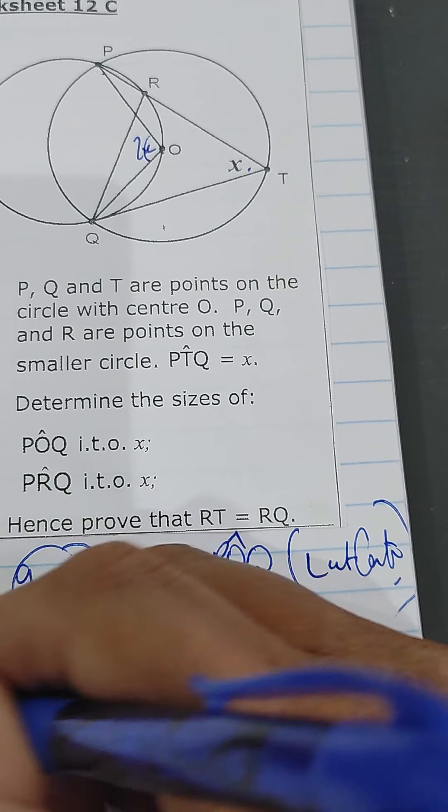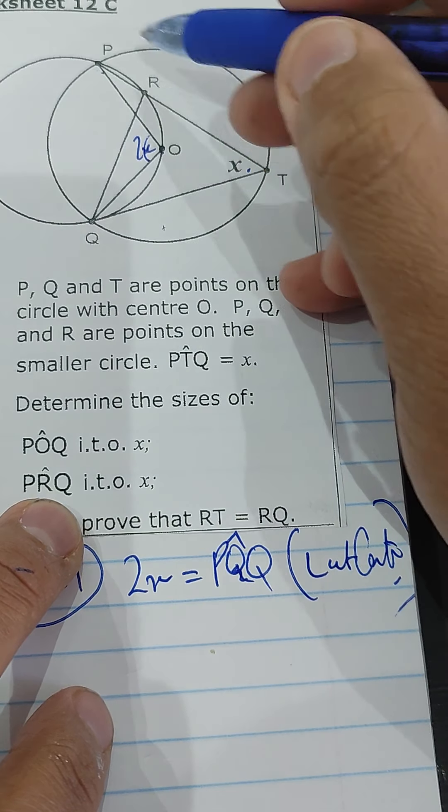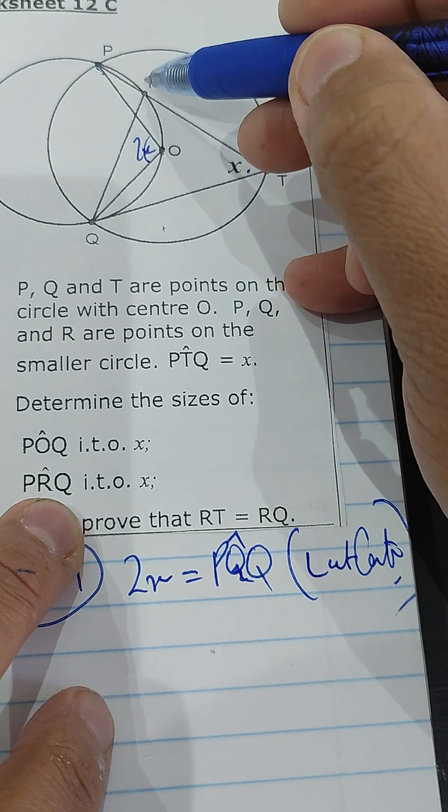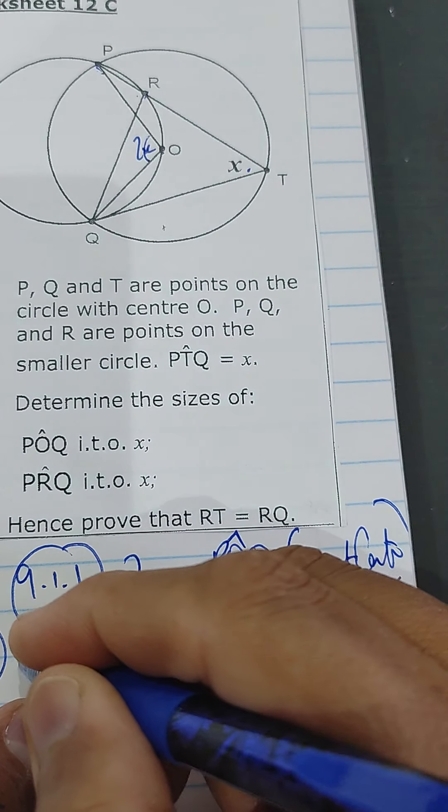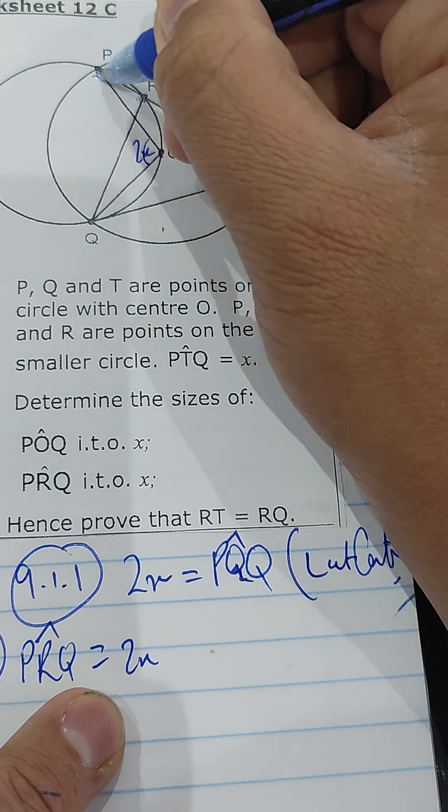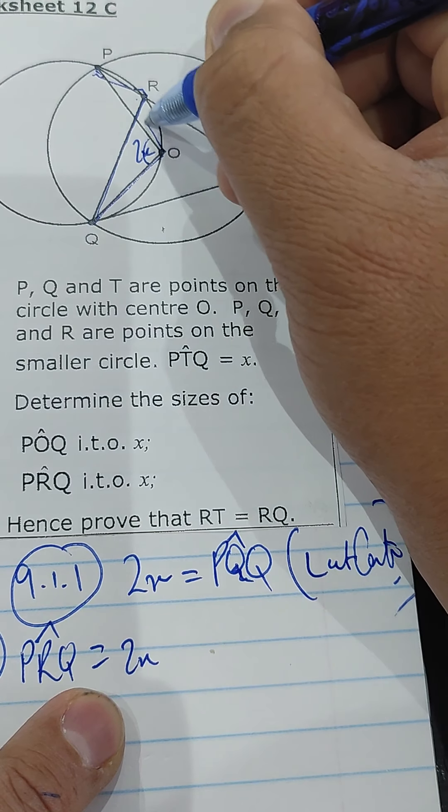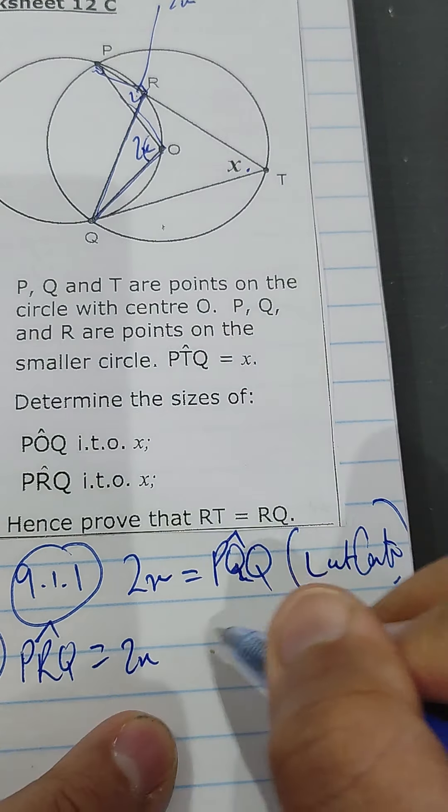In 9.1.2, they said PRQ. So P, R, Q. This PRQ is also 2x, and you see it's angles in the same segment. It's angle in the same segment, and it's coming from arc PQ.